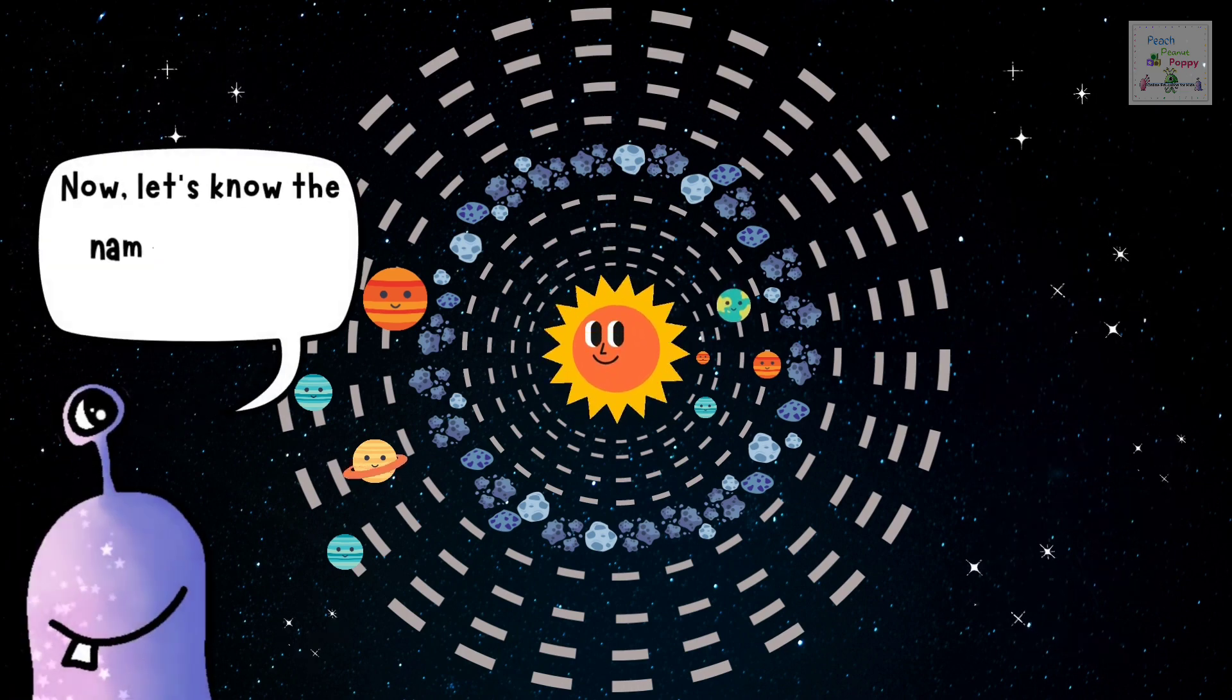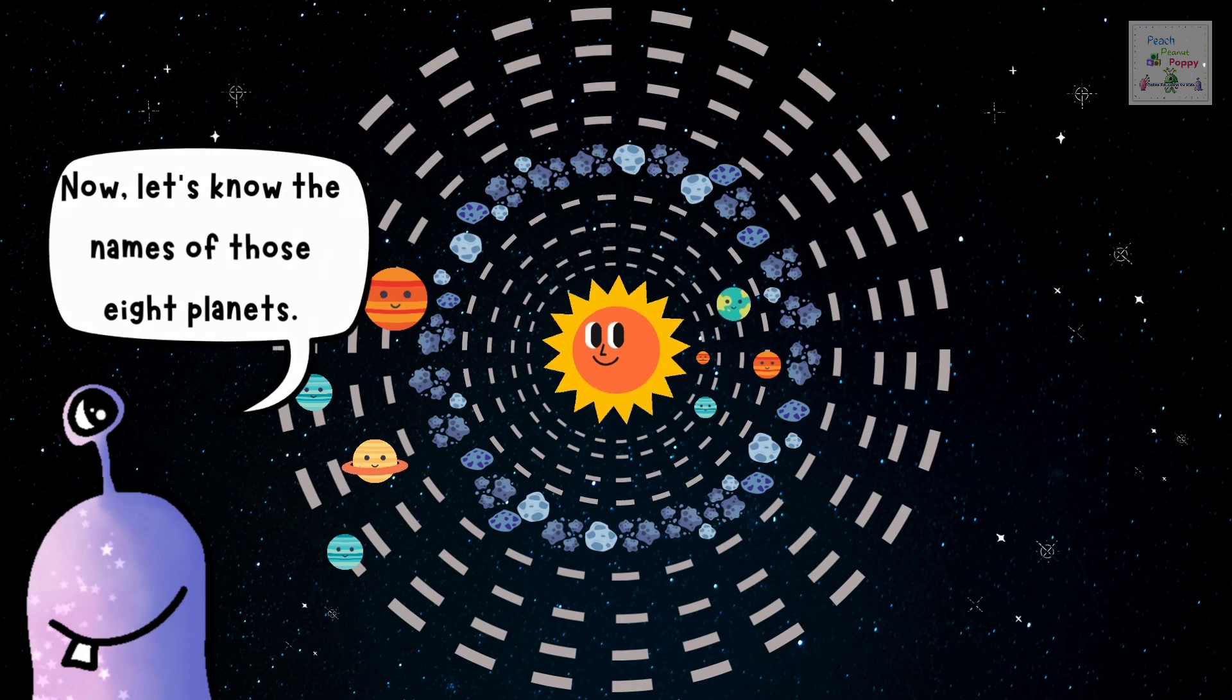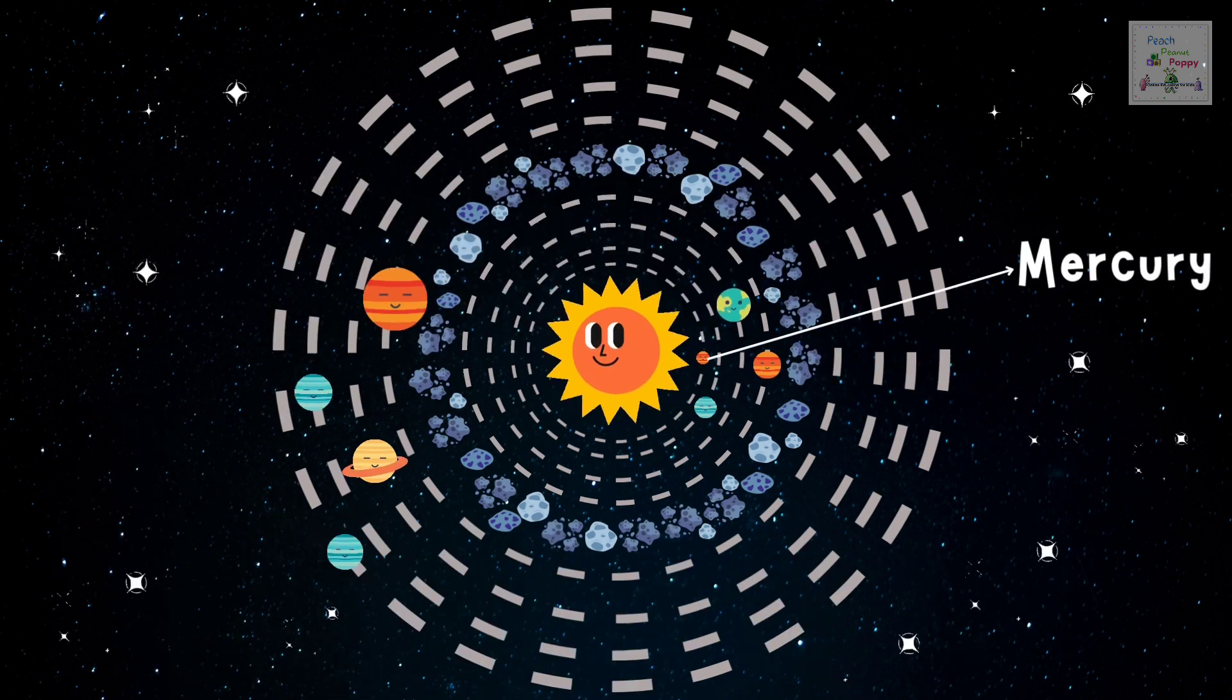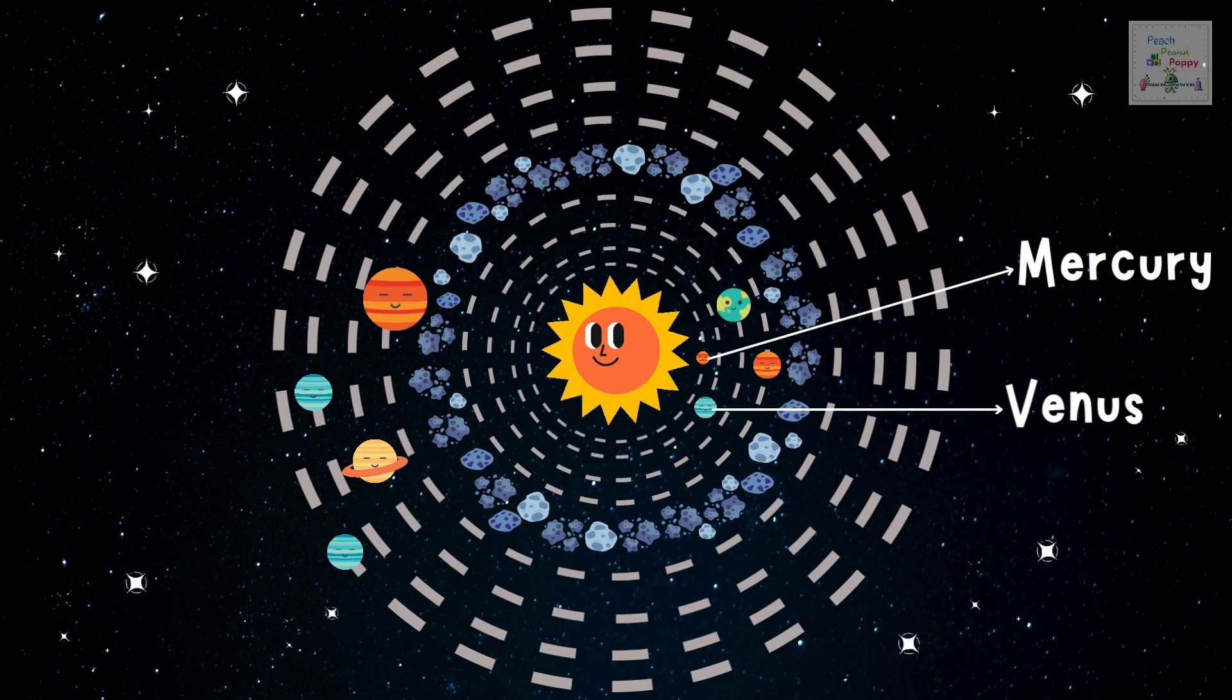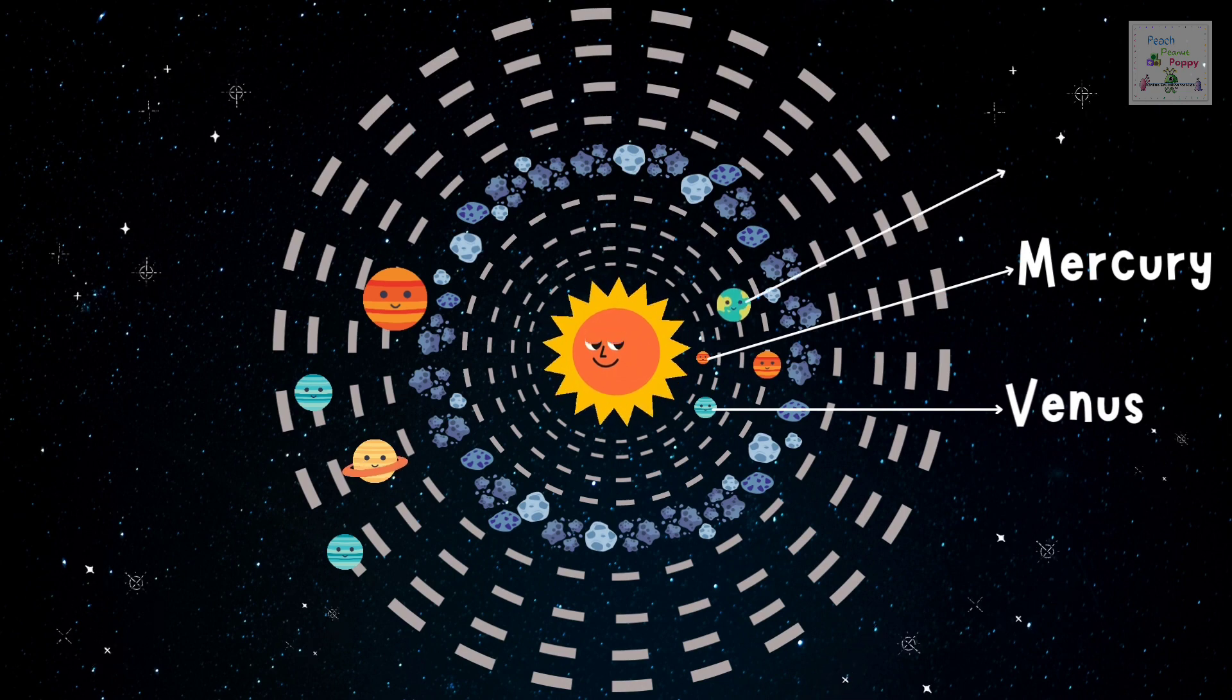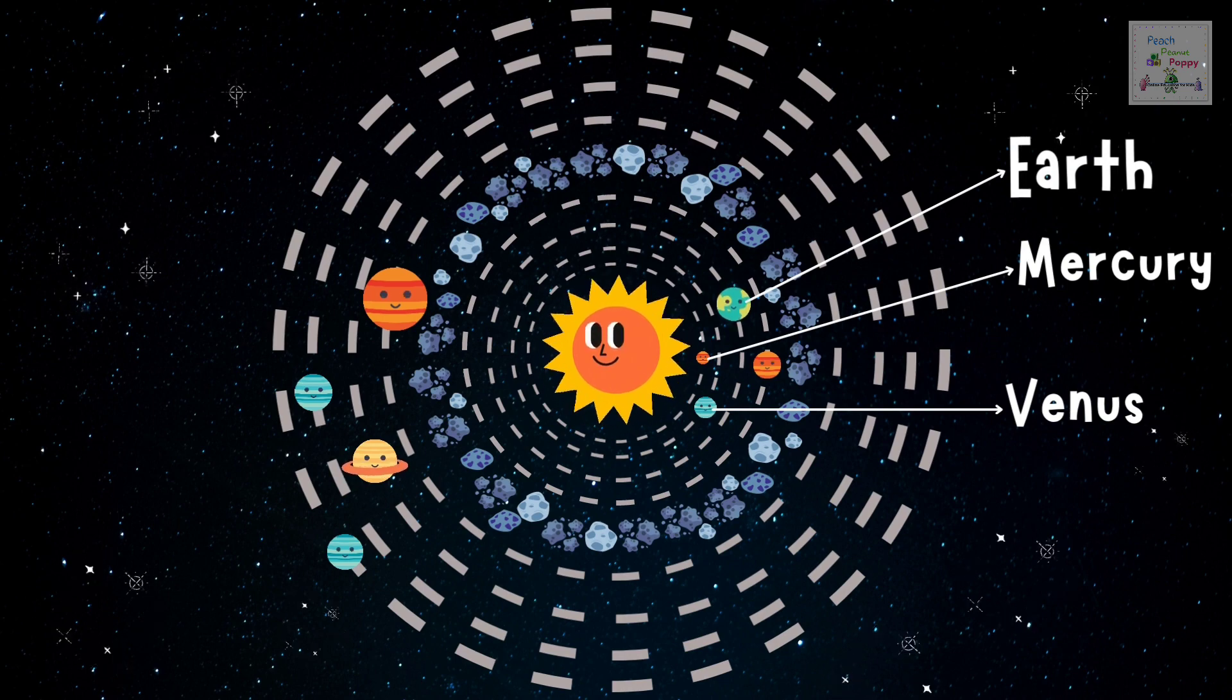Now, let's know the names of those eight planets. The first one is Mercury. Then there's Venus. Then, of course, our very own Earth. Then we have Mars.